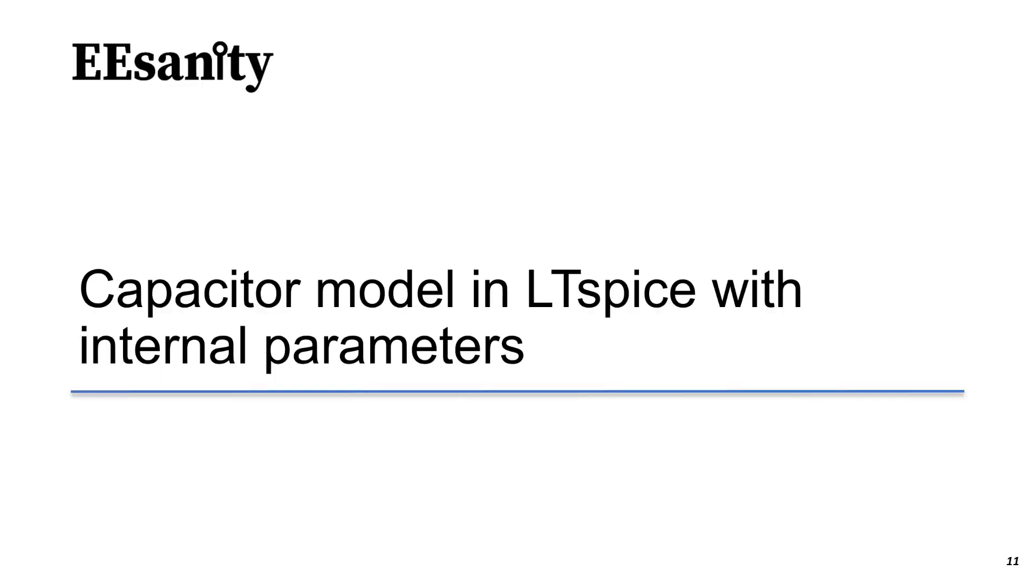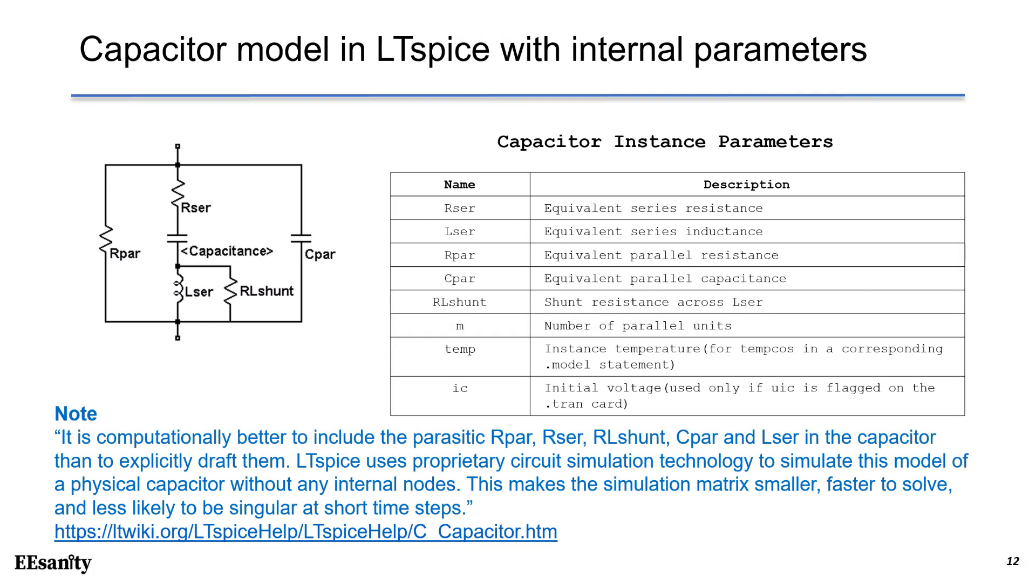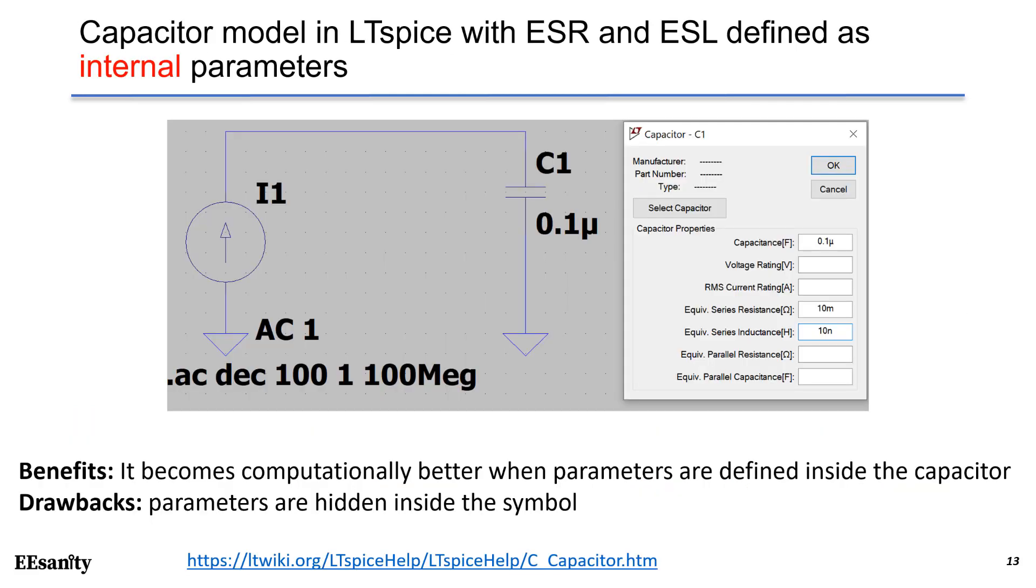The second way is to use internal parameters to add ESR and ESL. This is a capture from LTSpice Wiki. You can see there are quite a few parameters we can define inside the capacitor model. The benefit is that the computational time will be smaller in LTSpice. Now, let's go to the capacitor model and right-click. We can add parameters such as ESR and ESL.